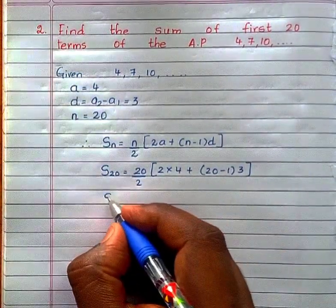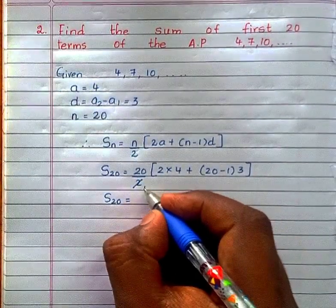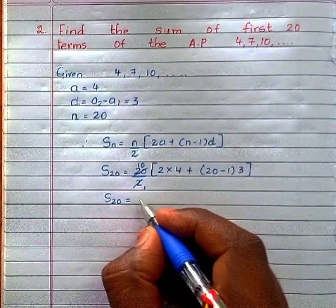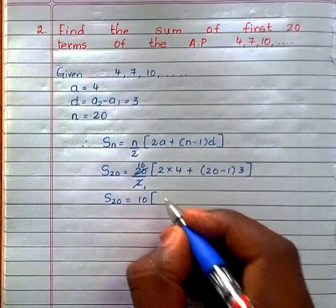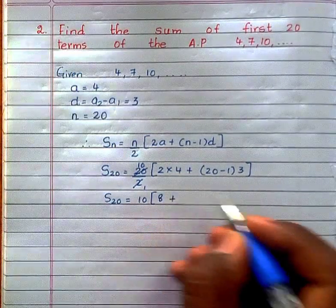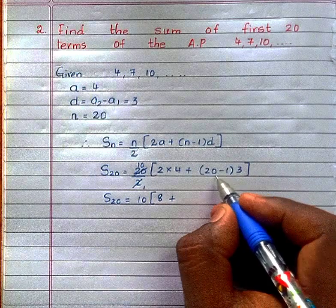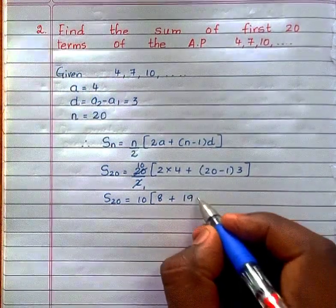Now, S₂₀, the sum of 20 terms equals 10 × [8 + 19 × 3]. We get 19 × 3 = 57.